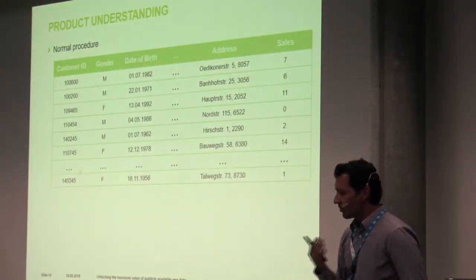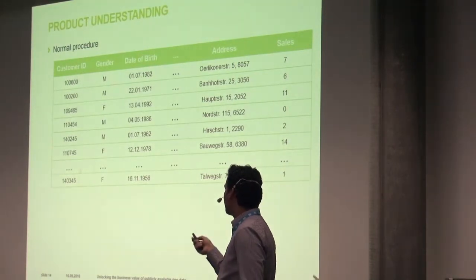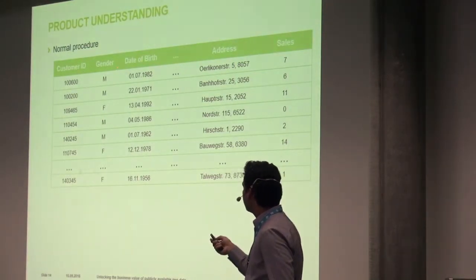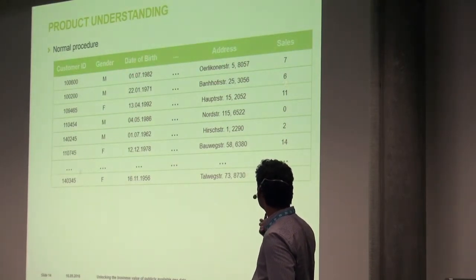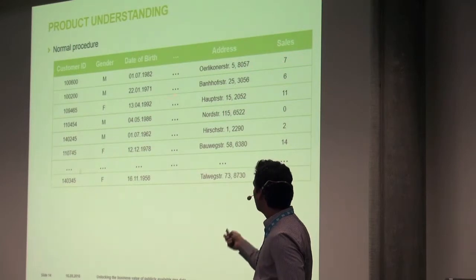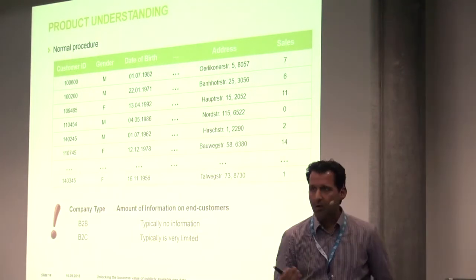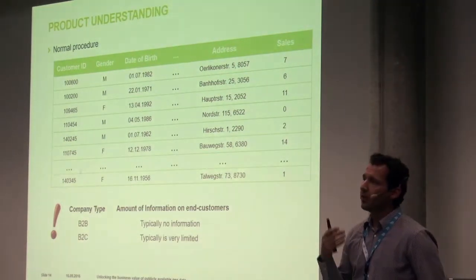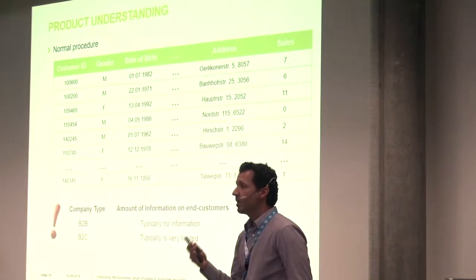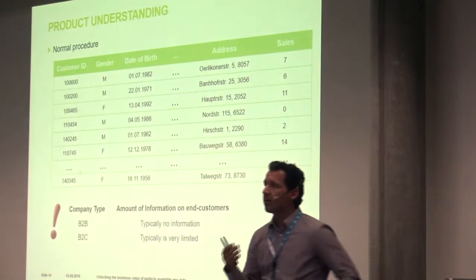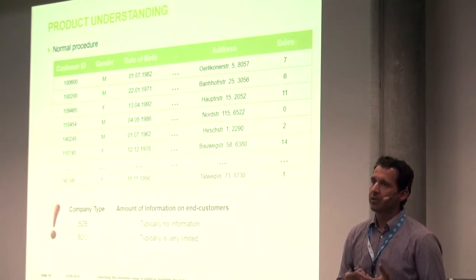Typically if you want to answer that question, you would need sales data along with information on the persons — like gender, date of birth, age — and then try to explain sales with respect to demographic characteristics. But in our case, our client was a B2B company, so they don't have direct access to the end customer. How can we understand a product in a data-driven way if we don't have information about the end customer?